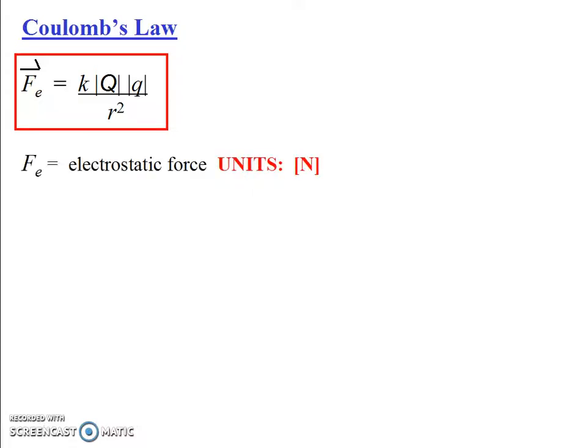So let's go ahead and define our terms like we always do. F sub e is the electrostatic force, this new type of force that exists between charged objects, but it's a force so of course it's measured in Newtons. There's nothing new, and of course it's a vector.